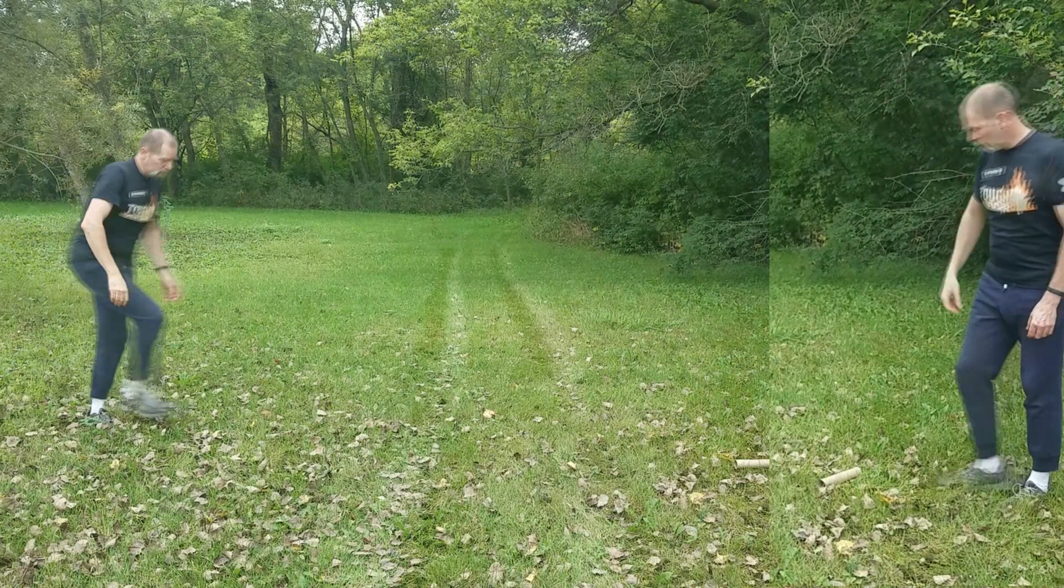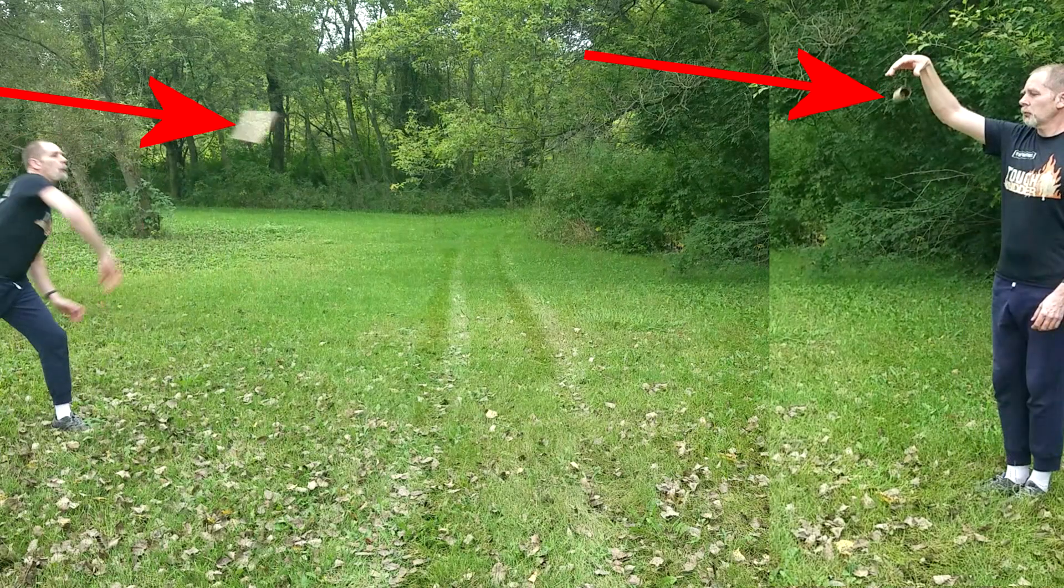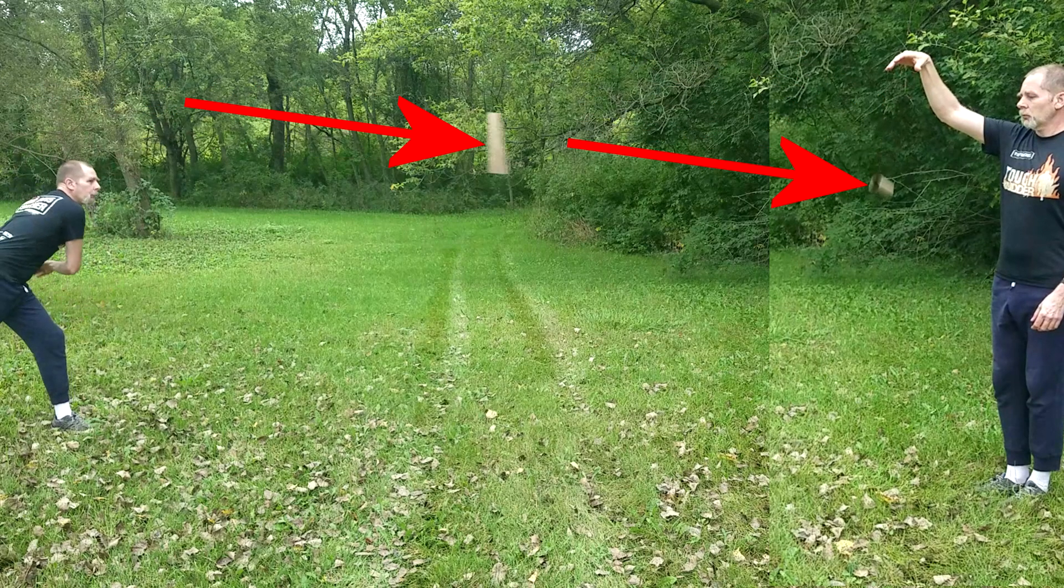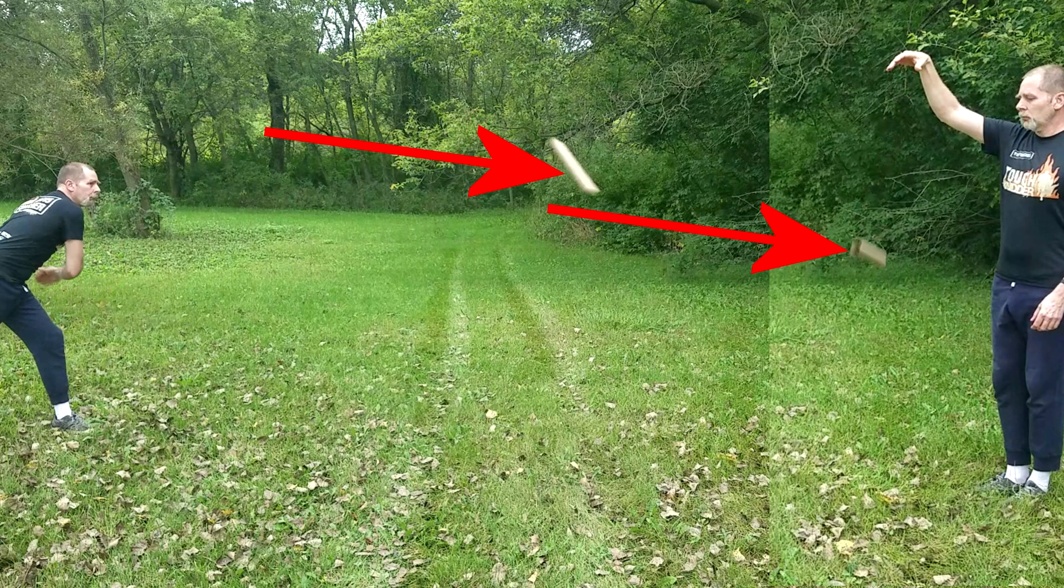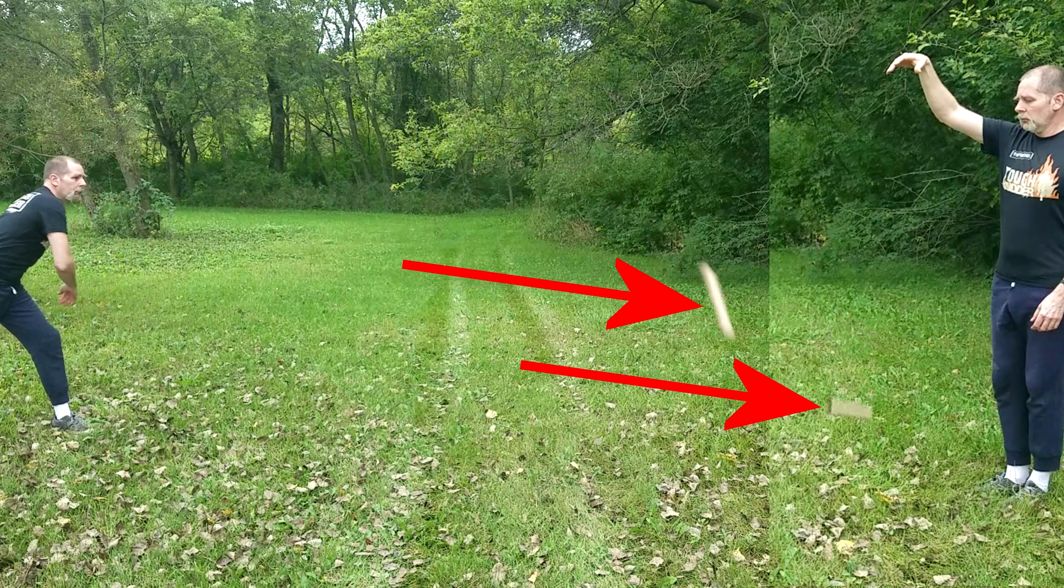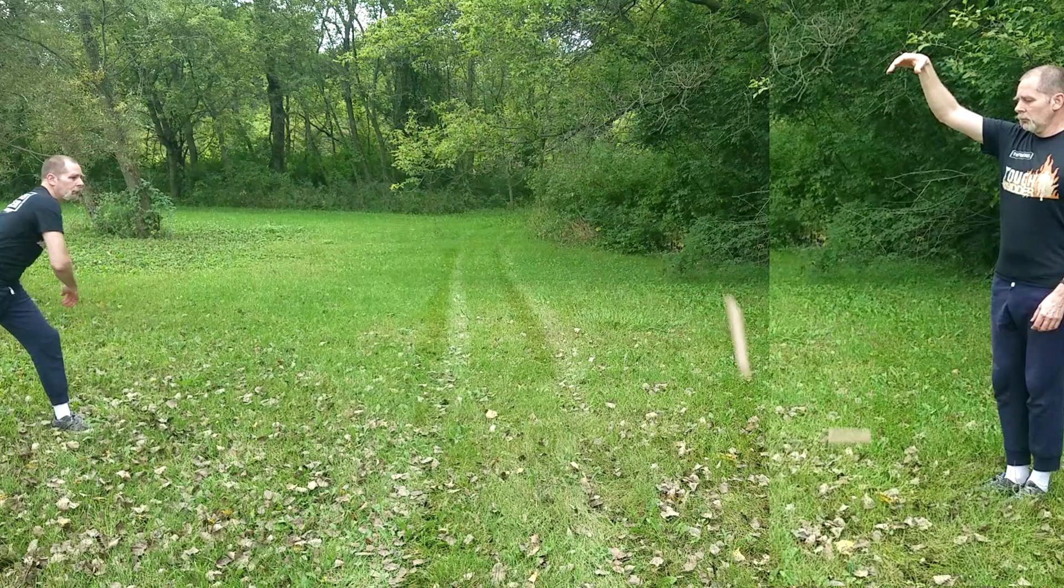Howdy folks! Today we're going to look at the Magnus effect. That's when you throw an object with spin and it takes a curved path. There are plenty of videos that show that it happens, but none that offer what I consider a good explanation of why or how it happens. We're going to visualize it today, so let's get to it!